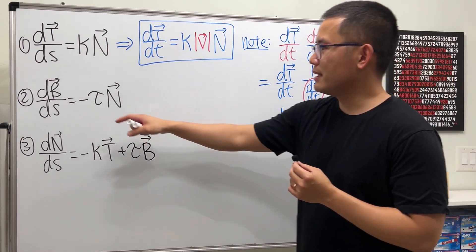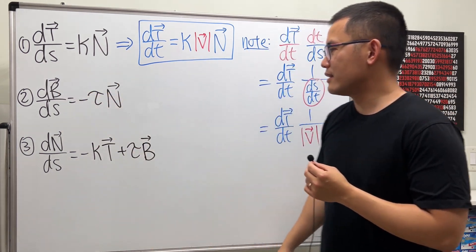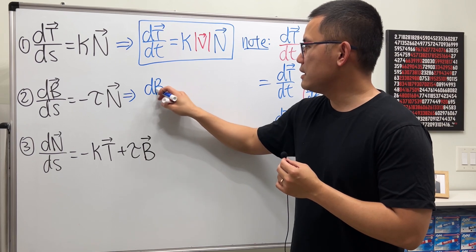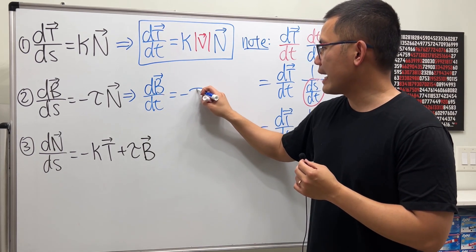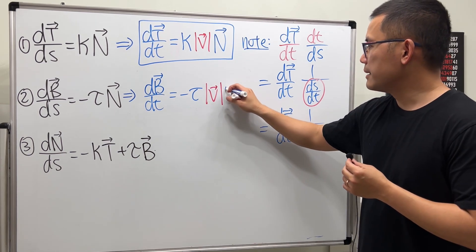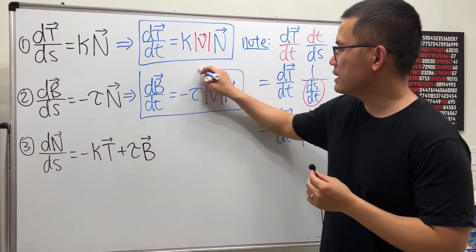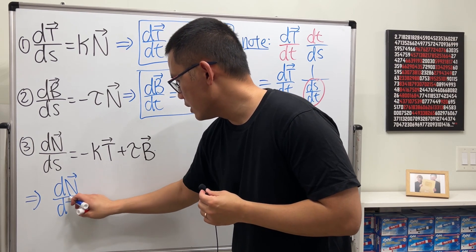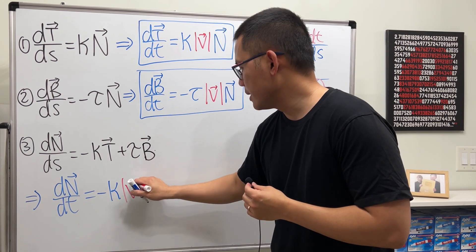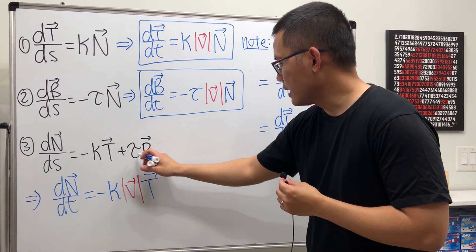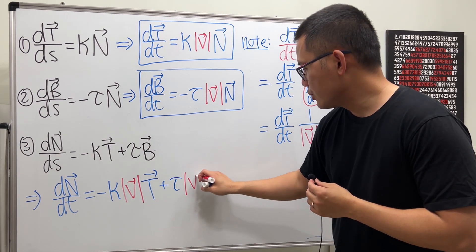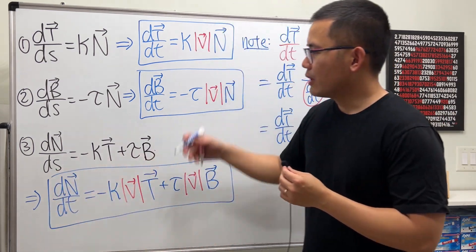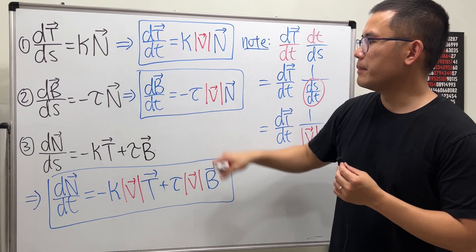Applying the same chain rule approach to the other two formulas: dB/dt equals negative tau times the magnitude of the velocity times the unit normal vector N. And dN/dt equals negative kappa times the magnitude of the velocity times the unit tangent vector T, plus tau times the magnitude of the velocity times the unit binormal vector B. These three are the Frenet-Serret formulas differentiated with respect to time t.